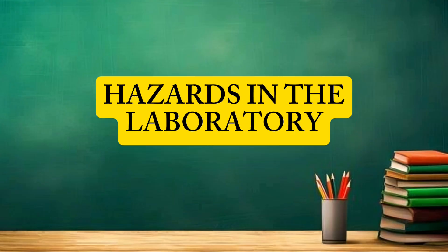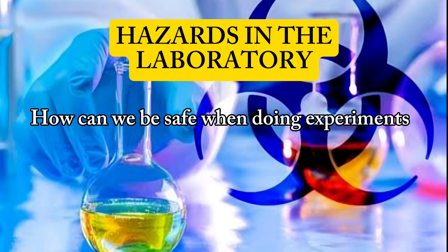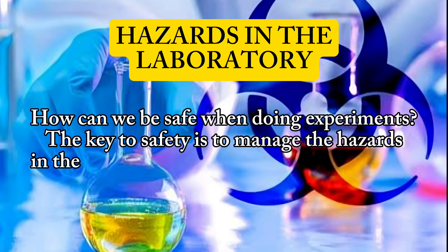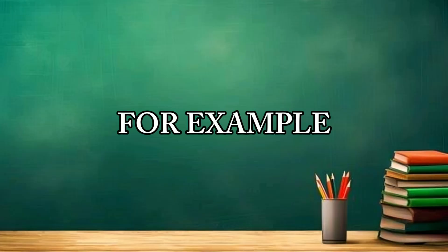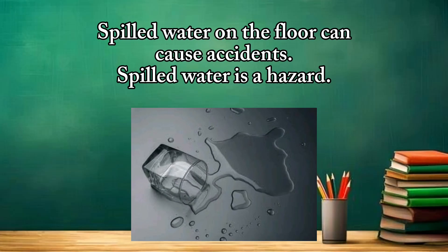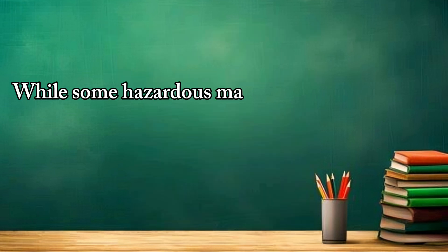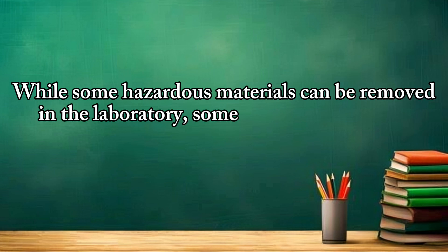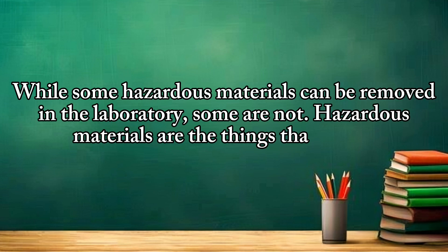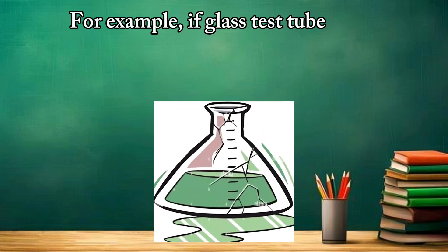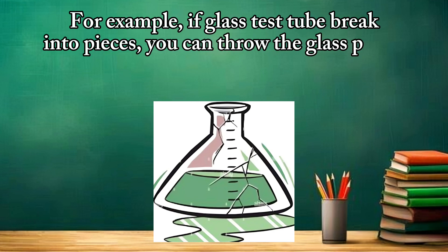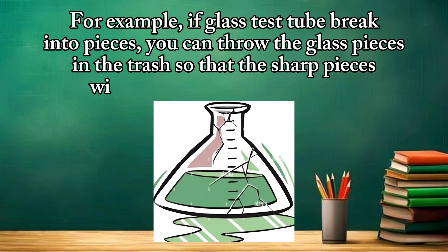Hazards in the laboratory. How can we be safe when doing experiments? The key to safety is to manage the hazards in the laboratory. Hazards are things that can bring harm to anyone or anything. For example, spilled water on the floor can cause accidents — spilled water is a hazard. While some hazardous materials can be removed from the laboratory, some are not. Hazardous materials are the things that can be a source of danger. For example, if glass test tubes break into pieces, you can throw the glass pieces in the trash so that the sharp pieces will not be able to hurt anyone.